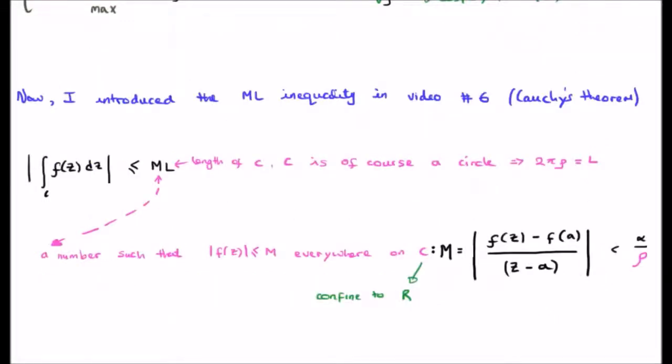Now I introduced the ML inequality in video number six which is Cauchy's theorem. I've discussed that here in the center where we say that the magnitude of our contour integral is going to be less than or equal to M times L. L is the length of our curve C and M is a number such that the magnitude of the integrand is always going to be less than M.